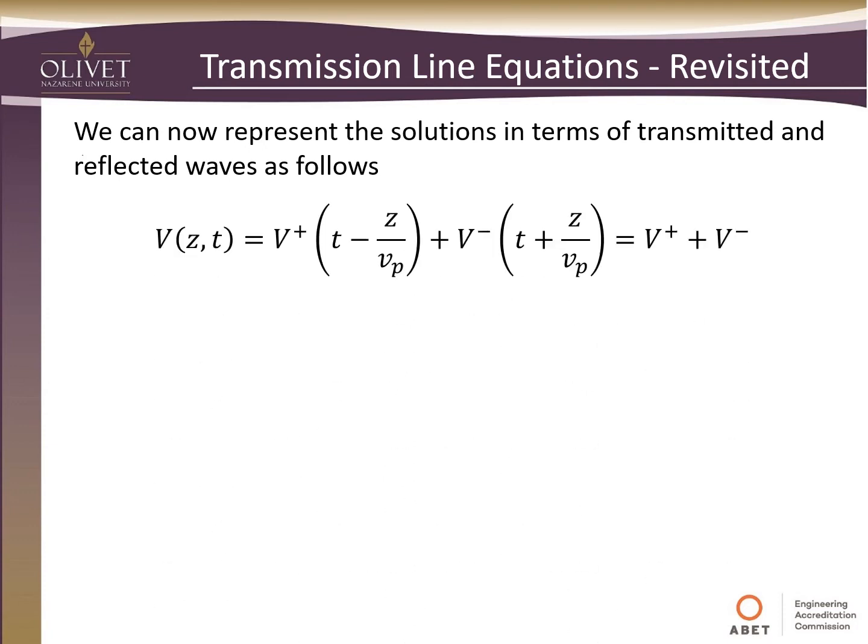With those definitions, we can now rewrite these equations. Our equation for voltage in terms of position and time, we're going to write as V⁺ and V⁻. V⁺ is with t minus z over phase velocity, and V⁻ is with t plus z over phase velocity. Remember, when we have the minus sign, that indicates a forward transmitting wave. When we have the plus sign in the argument, that's a reflected wave. So this notation represents our transmitted wave and reflected wave.